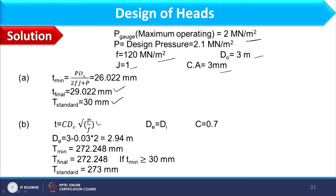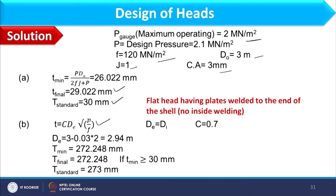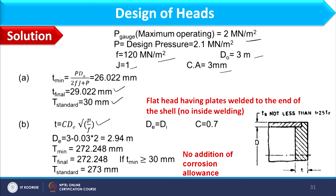In part B we find the thickness of the flat head. The expression requires values of C, DE, and √(P/F). P and F are already known. DE and C depend on the type of attachment — here it is a flat head with plates welded to the end of the shell, no inside welding. For this connection, D equals Di (inner diameter of shell) and C = 0.7.